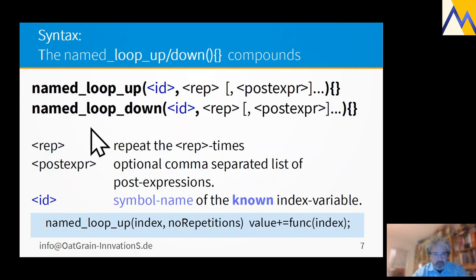The second compound I want to introduce is a named loop up or a named loop down which takes the same mandatory field, the count of repetitions and the optional post expression list, and an ID field that allows a simple name of a known index variable.